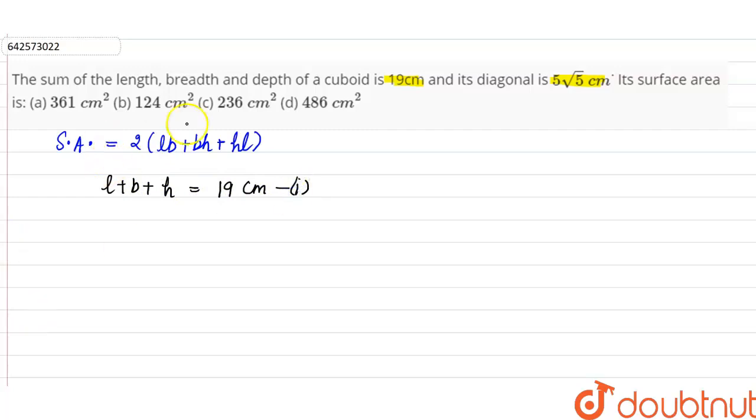So equation two will be the diagonal of cuboid. Now the formula for calculating the diagonal of cuboid is under root of L square plus B square plus H square. So diagonal here is given 5 root 5, so 5 root 5 is equal to under root of L square plus B square plus H square.